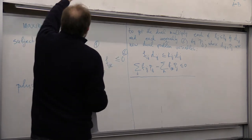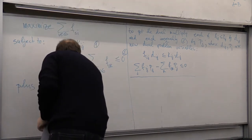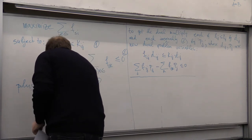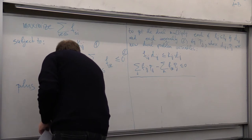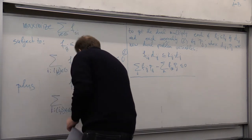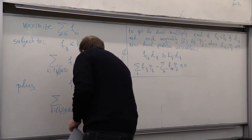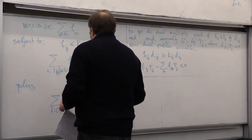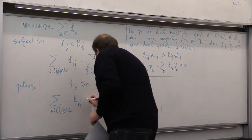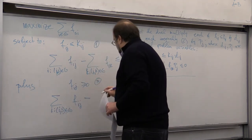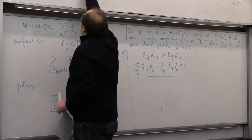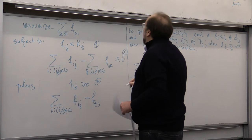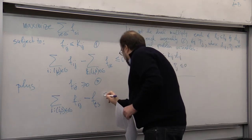So, we have to say here that all incoming flow into the sink, so all I's such that I,S belongs to G, F of I,S has to be minus the all the outgoing flows, which is just flow from T to S. This has to be smaller or equal than zero.